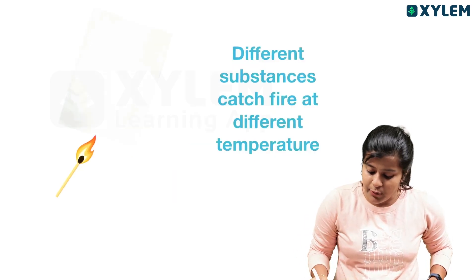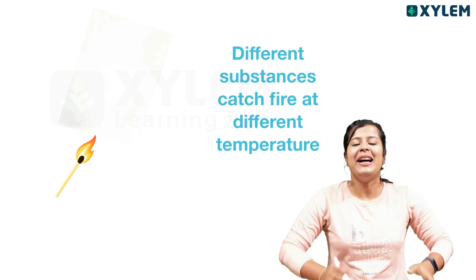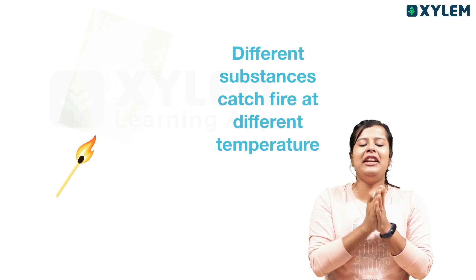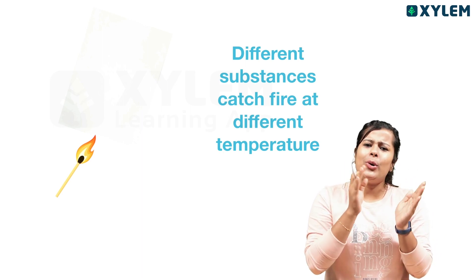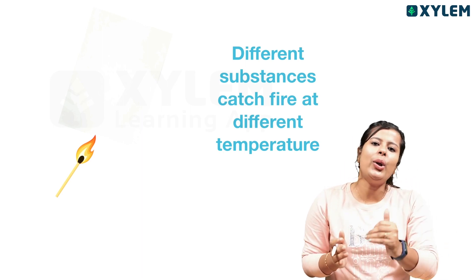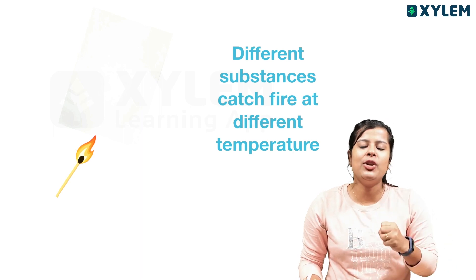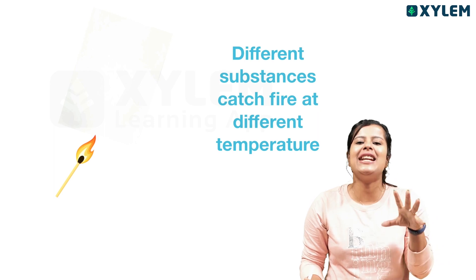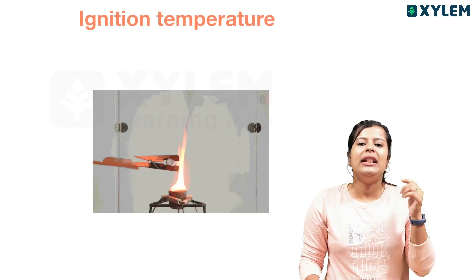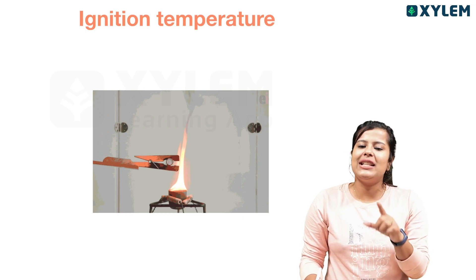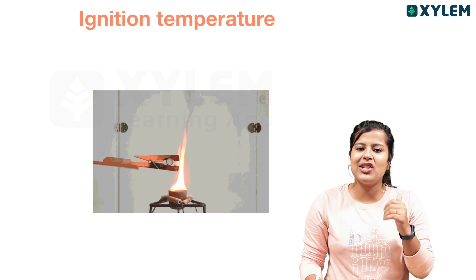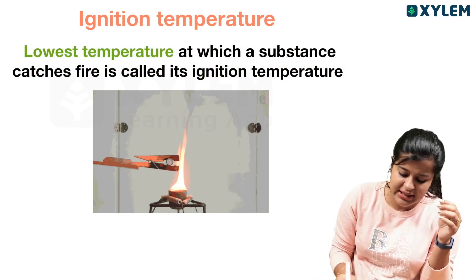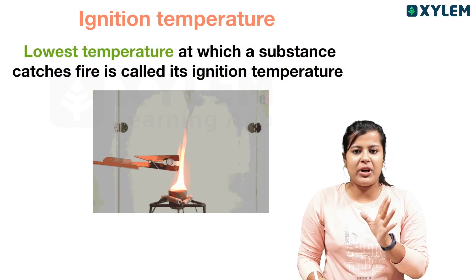Different substances, gases — different temperatures. If you are using paper, you are using kerosene — it is different substances, entirely different. So what is the reason behind that? The answer is ignition temperature. What is the definition of ignition temperature? The lowest temperature at which a substance catches fire is called ignition temperature.